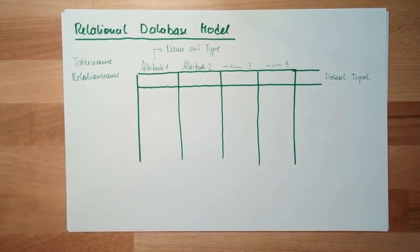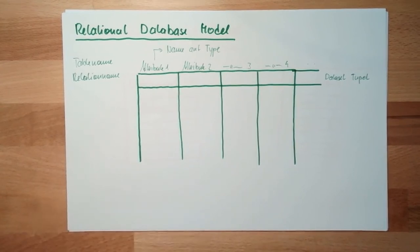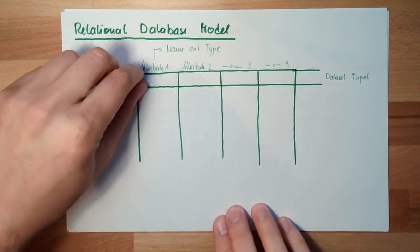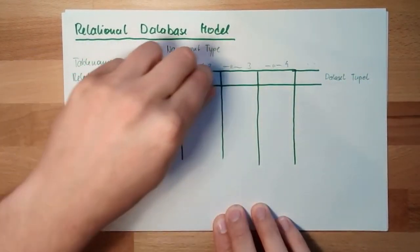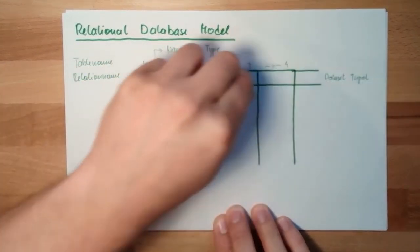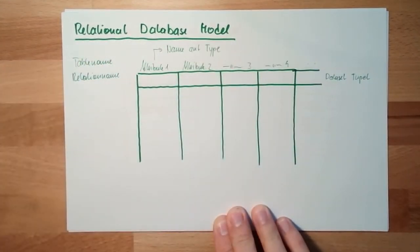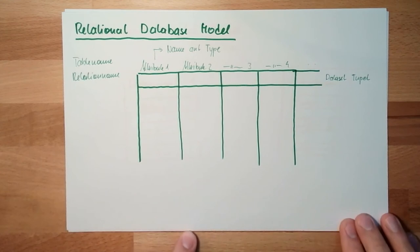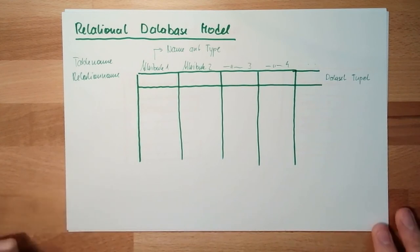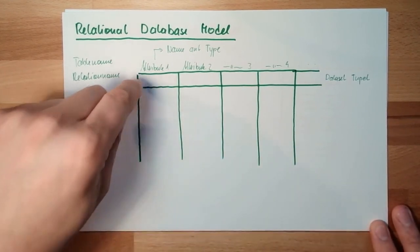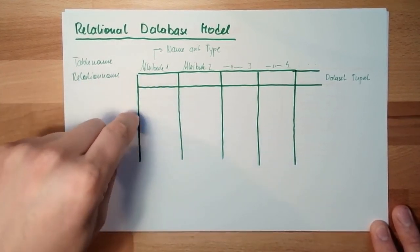To have a relation, it is important to identify one record, one data set, one tuple, with one key. There must be one key inside. A key is something which identifies exactly one line in the table.